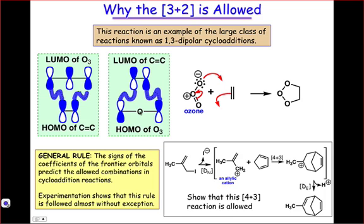To end this lesson, see if you can show that the 4 plus 3 cycloaddition is allowed by drawing the frontier molecular orbital interactions between the allylic cation shown and cyclopentadiene.